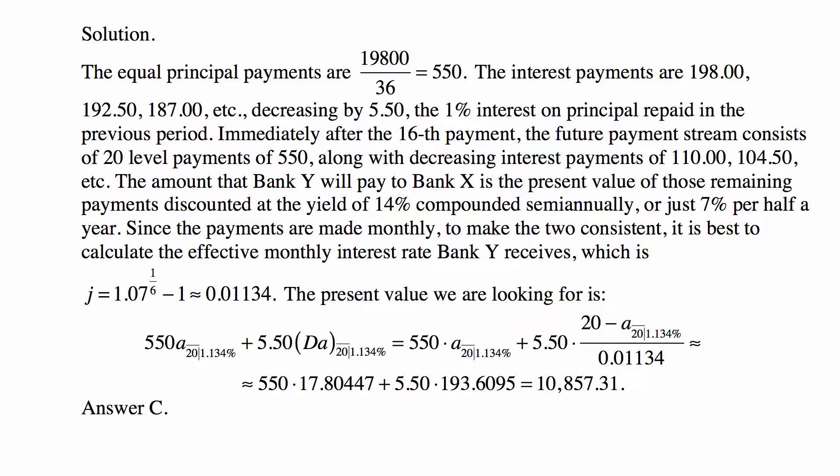So here's the rate — it's a little above 1% per month, which makes sense because you have 7% per half year. The present value we're looking for is the level payments of $550 discounted at that interest rate as an annuity over 20 periods, plus $5.50 times a decreasing annuity, because the annuity decreases by $5.50 every step. Substituting the formula for the decreasing annuity — (20 − a-angle-20) divided by j, at the interest rate of approximately 1.134% — and plugging in all the values, we get an answer of $10,857.31, which is answer C.